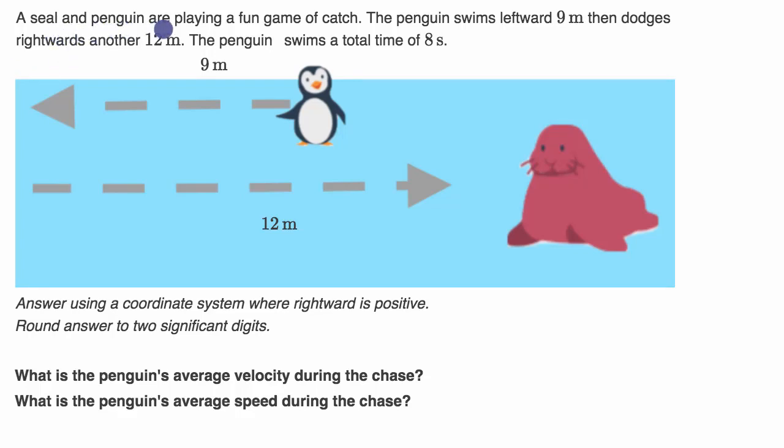We are told a seal and a penguin are playing a fun game of catch. The penguin swims leftward nine meters, then dodges rightwards another 12 meters. The penguin swims a total time of eight seconds.